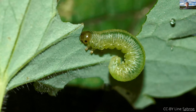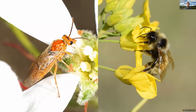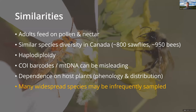Sawflies do share a number of similarities with bees. Adults visit flowers for pollen and nectar — usually the same flowers of the plants they fed on as larvae — so they are occasionally pollinators. They also have a similar species diversity in Canada: about 800 species for sawflies and about 950 bees. Being that they're both hymenopterans, they are therefore both haplodiploid, and this has a consequence that COI barcodes of mitochondrial DNA don't work so well and can be misleading. This problem is a lot more widespread with sawflies; in bees it's really mostly just an issue for recent radiations of closely related species — a great example is Lasioglossum.